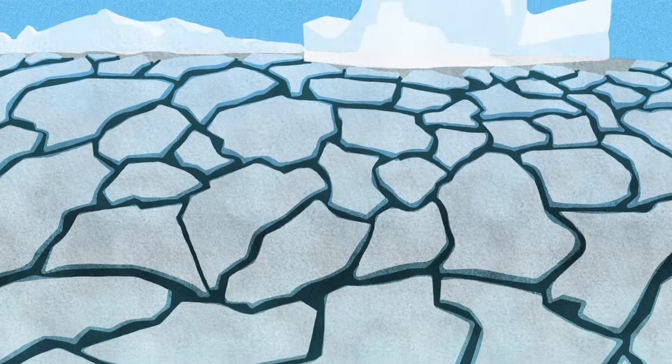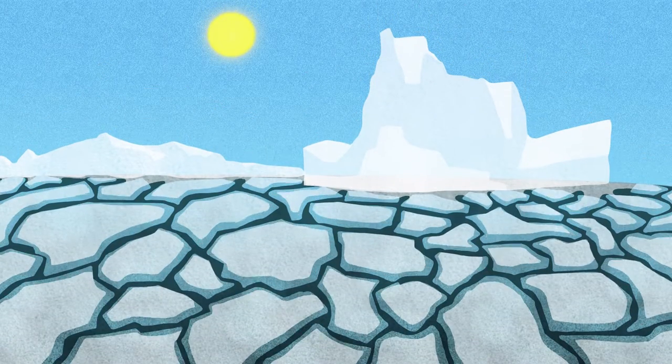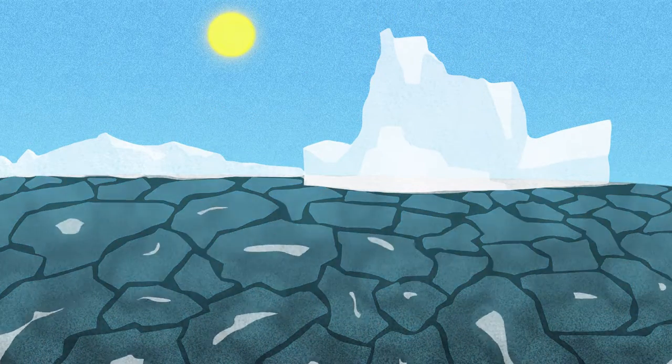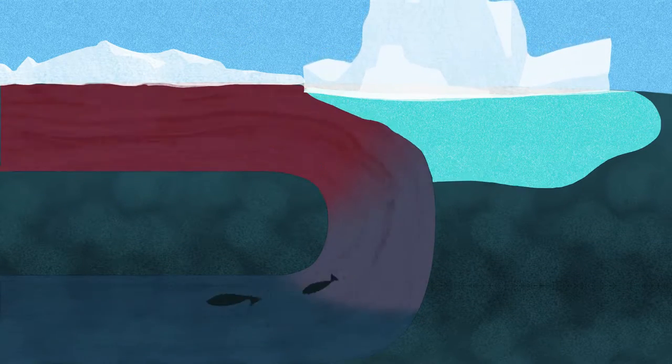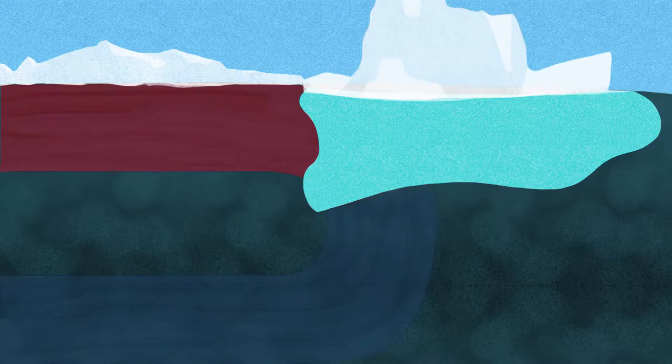As global temperatures increase, Arctic ice melts, increasing the freshwater input to the ocean. This lowers the overall density of the Arctic surface ocean waters, which may slow down or even stop deep water formation.